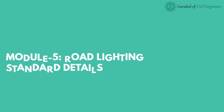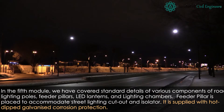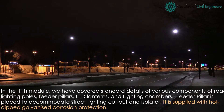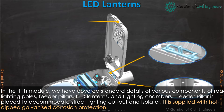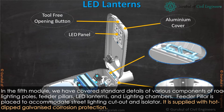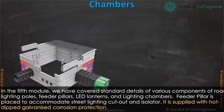Module 5: Road Lighting Standard Details. In the fifth module, we have covered standard details of various components of road lighting poles, feeder pillars, LED lanterns, and lighting chambers. Feeder pillar is placed to accommodate street lighting cutout and isolator. It is supplied with hot-dipped galvanized corrosion protection.